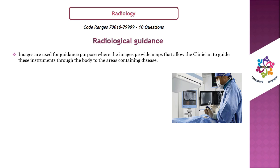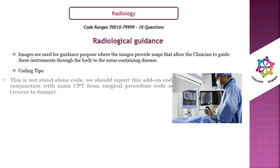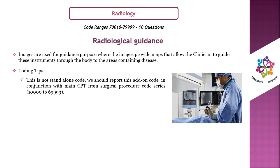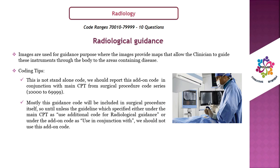Now for therapeutic radiology. Number 1: Radiological guidance. Images are used for guidance, providing maps that allow the clinician to guide instruments through the body to areas of disease. Coding tips: this is not a stand-alone code — report it as an add-on code in conjunction with the main CPT from the surgical procedure code series (10000–69999). This guidance code is mostly included in the surgical procedure itself, so only use the add-on code when the guideline specifies 'use additional code for radiological guidance' or 'use in conjunction with.'